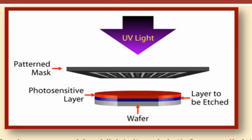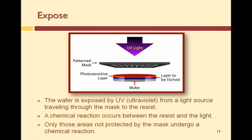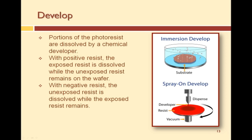A chemical reaction occurs between the resist and the light energy. The type of resist — whether it's positive or negative — determines the result of the chemical reaction, whether it hardens the resist or makes it soluble.